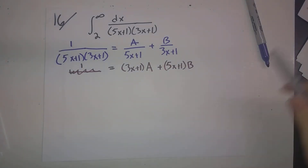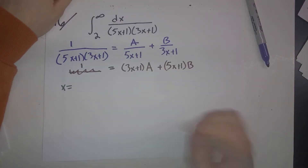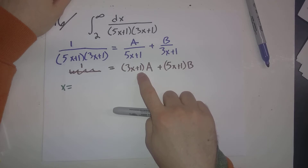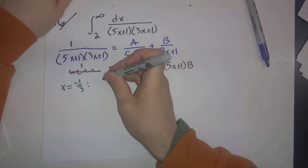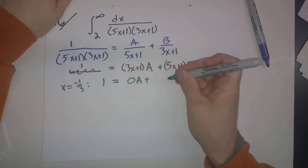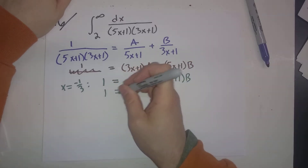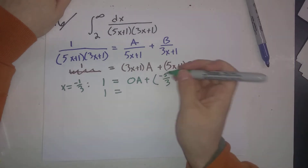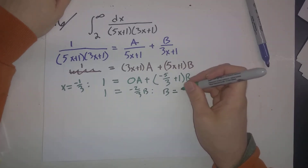Let's plug in values of x to figure out A and B. If we plug in x = -1/3, our goal is to make (3x+1) equal to zero. That gives 1 = 0·A + (-5/3 + 1)·B, which is 1 = (-2/3)·B, so B = -3/2.